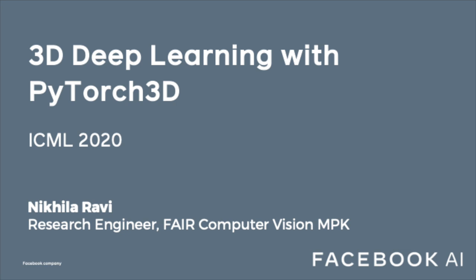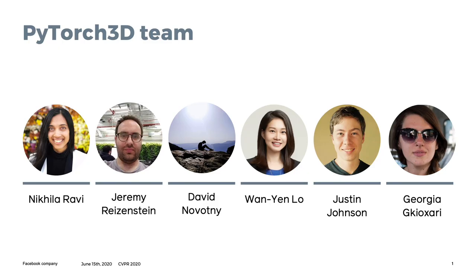Hi everyone, my name is Nikila Ravi and I'm a research engineer in the Facebook AI research team working on computer vision and 3D understanding. I'm presenting on behalf of the PyTorch 3D team — a small team of engineers and scientists spread across Facebook AI research in Menlo Park and London.